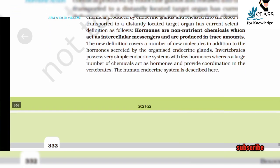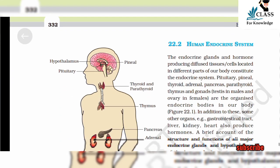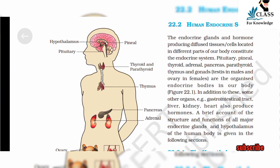The new definition covers a number of new molecules in addition to the hormones secreted by the organized endocrine glands. Invertebrates possess a very simple endocrine system with few hormones, whereas a large number of chemicals act as hormones and provide coordination in vertebrates. The human endocrine system is described here.